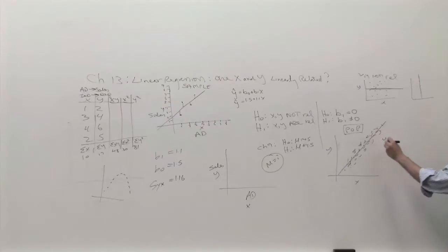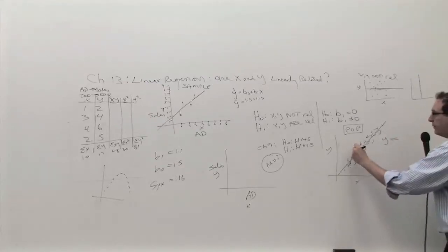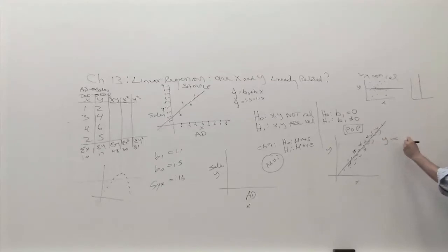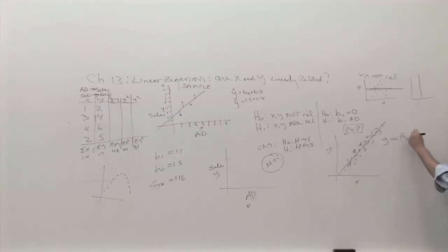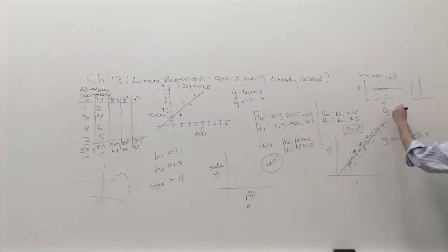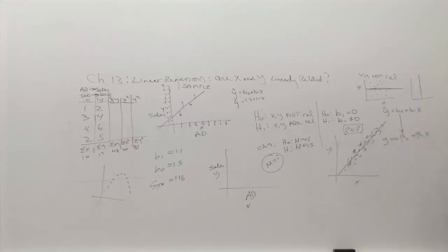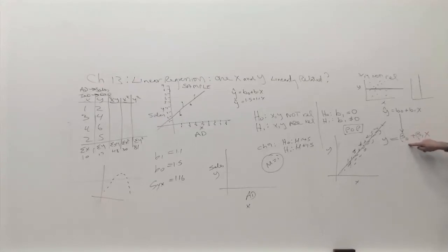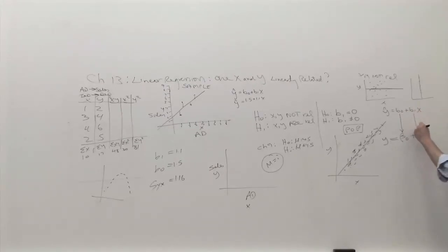The equation will not be y equals b0 plus b1x anymore. Now the equation is making an actual prediction for the y value — theoretically speaking, y equals beta0 plus beta1 times x. So b0 corresponds to beta0: if you had the whole population and you're trying to figure out the true intercept for millions of people, we don't know that number. We calculate it on our small sample and get b0, so b0 is an estimate for beta0, and b1 is an estimate for beta1.